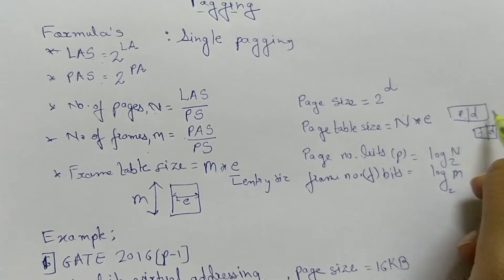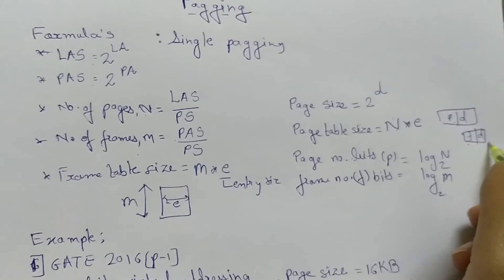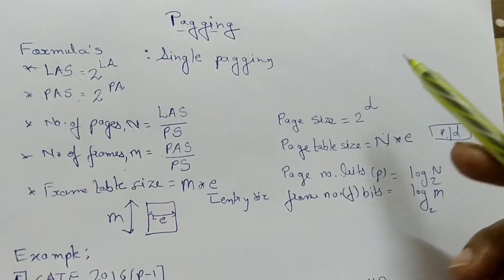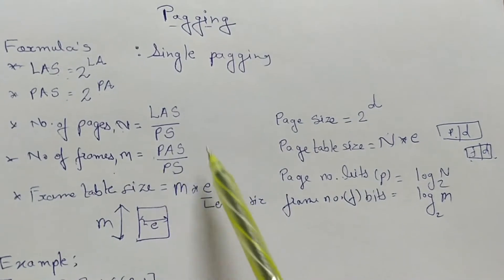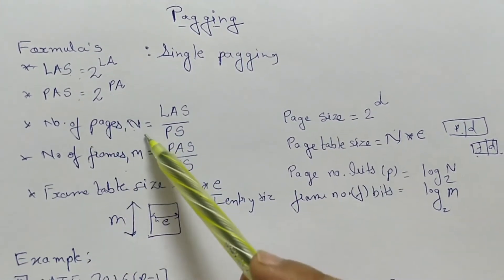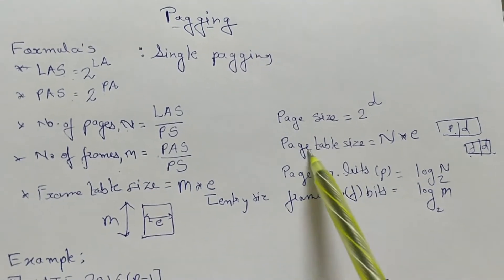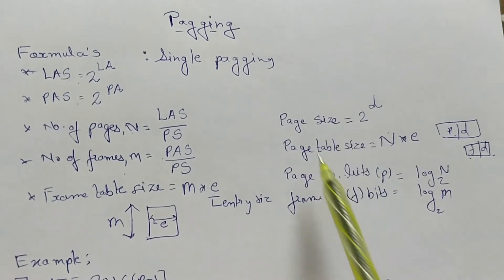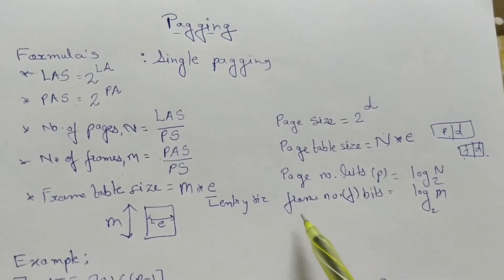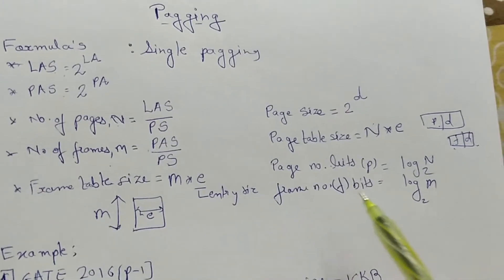Frame offset is D, and frame number of bits and offset together define the address. This is how we use the formulas for single paging: logical address space, physical address space, number of pages and number of frames, frame table size, page table size, page size, number of bits p (page number bits), and frame number bits.